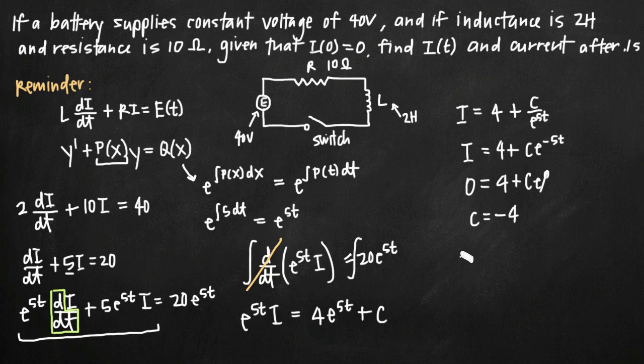Now if we just plug that back into our equation for i, we'll get i = 4 - 4e^(-5t). If we want to simplify, we can factor out a 4 and get 4(1 - e^(-5t)). This will be our final answer for an equation for i, so when it said find i(t), we've done that. Remember that i will always be in terms of amperes.